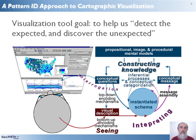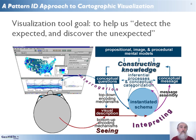Following from these ideas, if visualization is to help us detect the expected and discover the unexpected — a recently stated goal for visualization — then the tools must be able to prompt users to apply existing schemata to detect the expected while simultaneously breaking free of those schemata in order to discover the unexpected. Thus, the system should permit, in fact maybe even demand, that users view data from multiple perspectives.